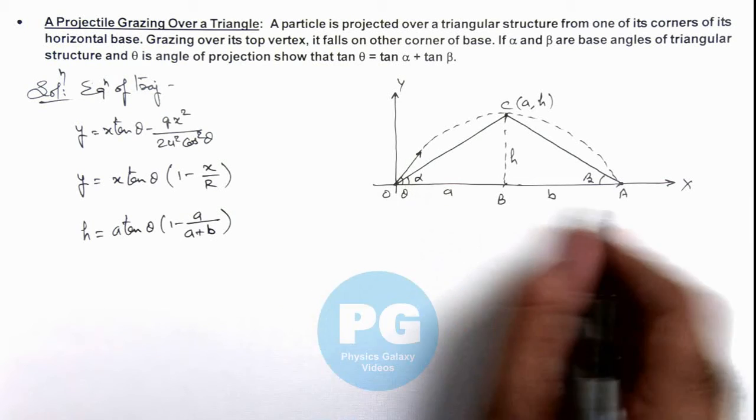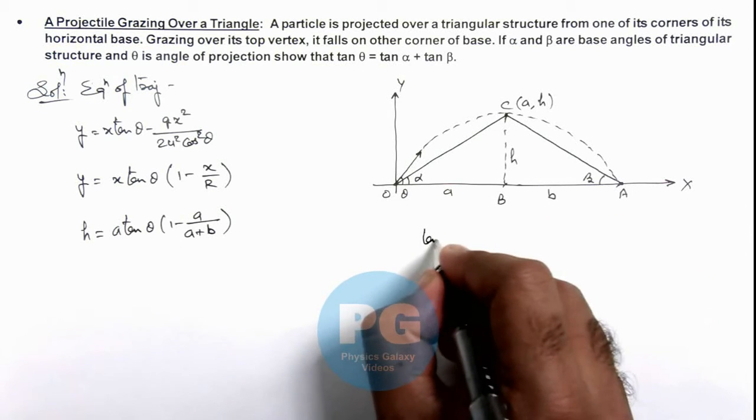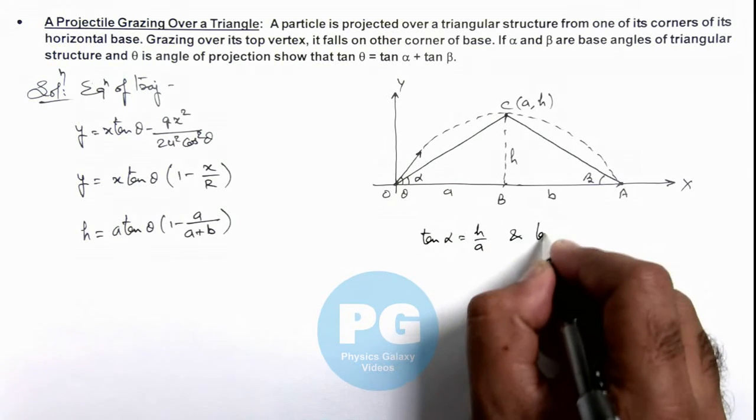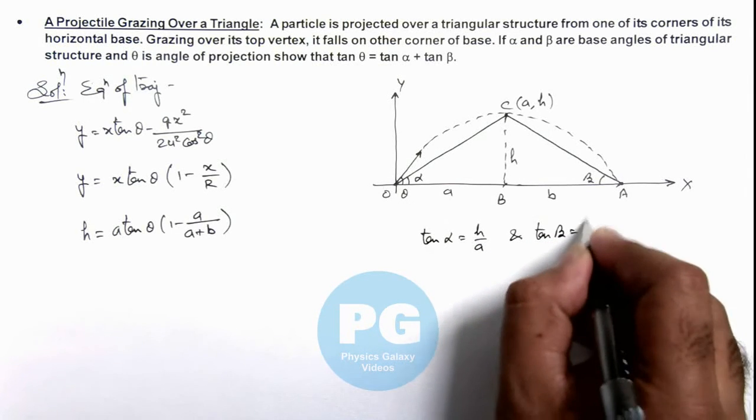For these two angles alpha and beta we can also write tan alpha is equal to h by a, and here tan beta can be written as h by b.